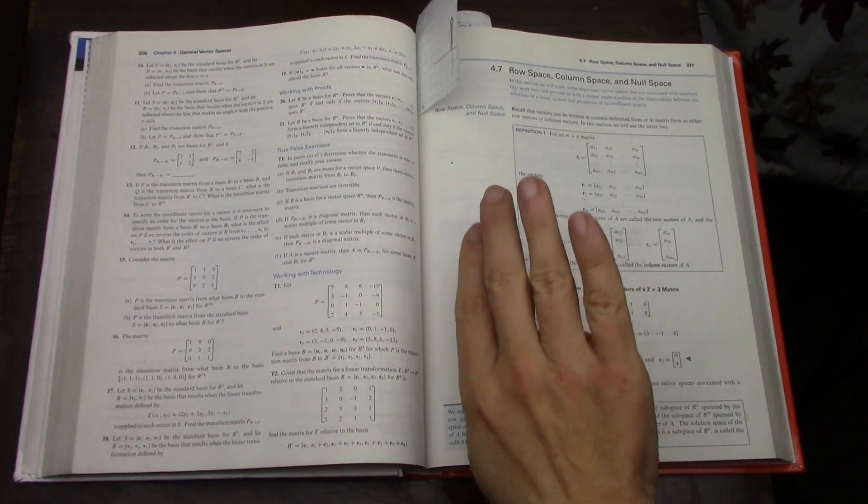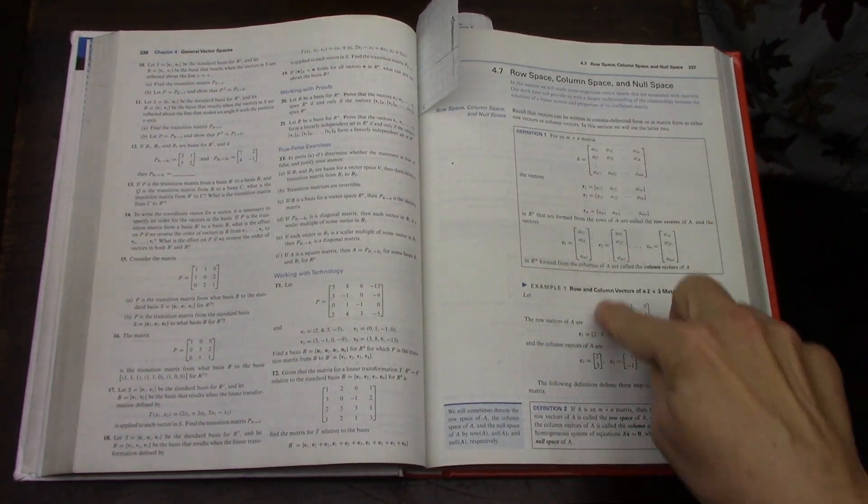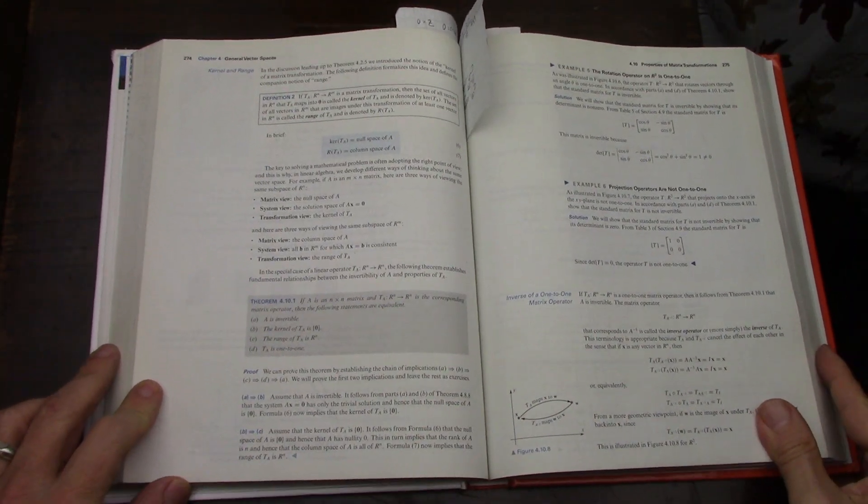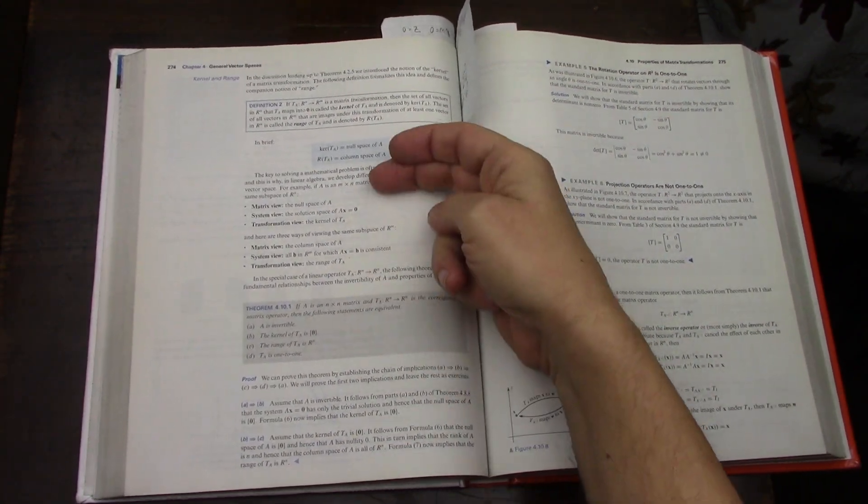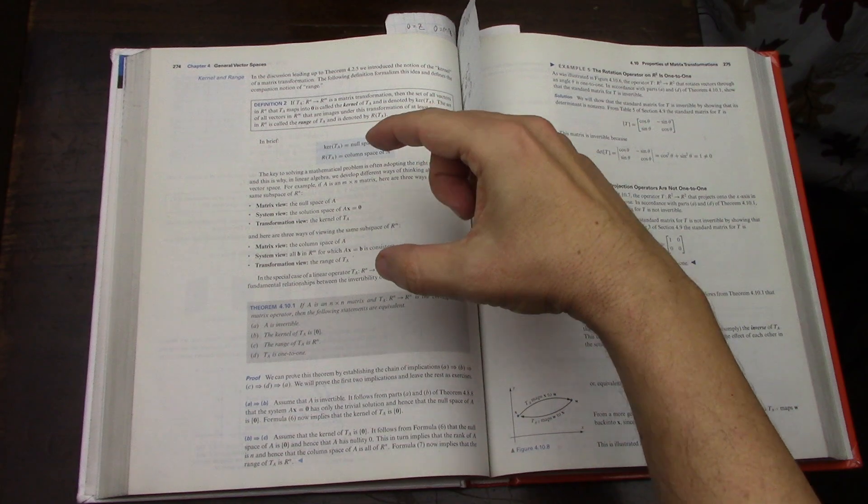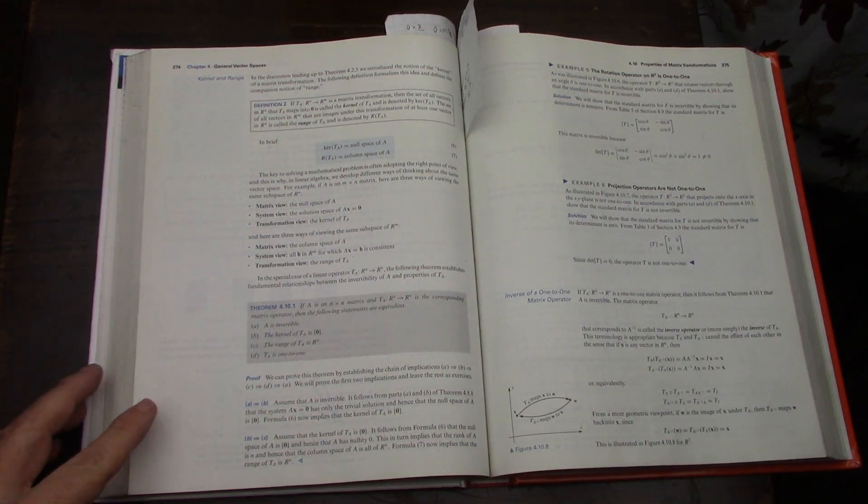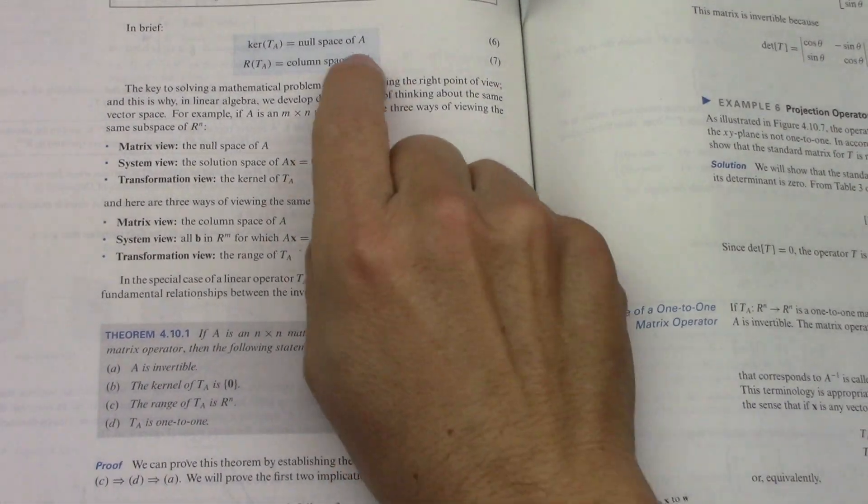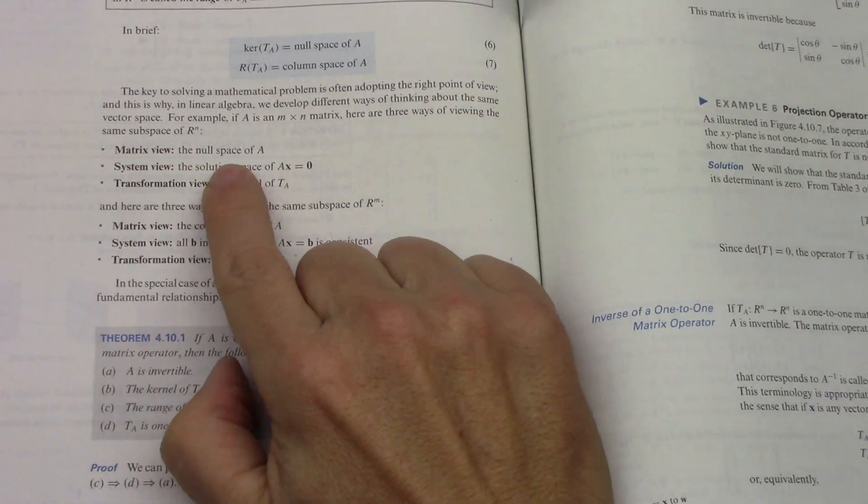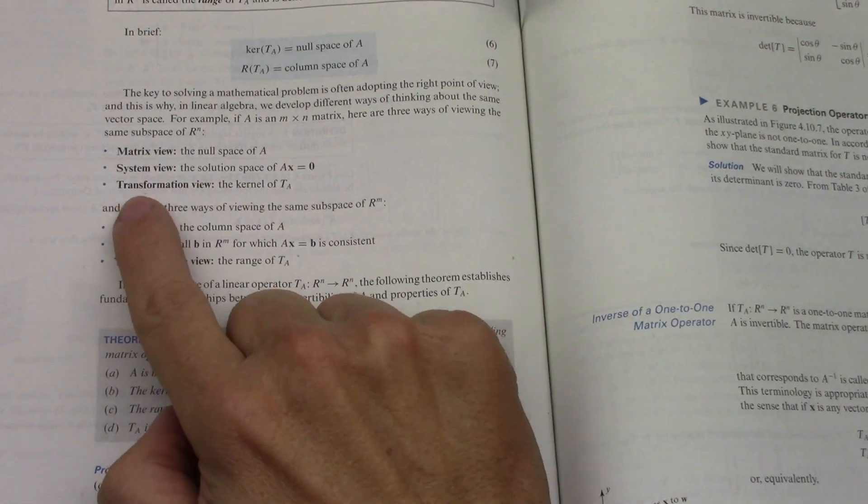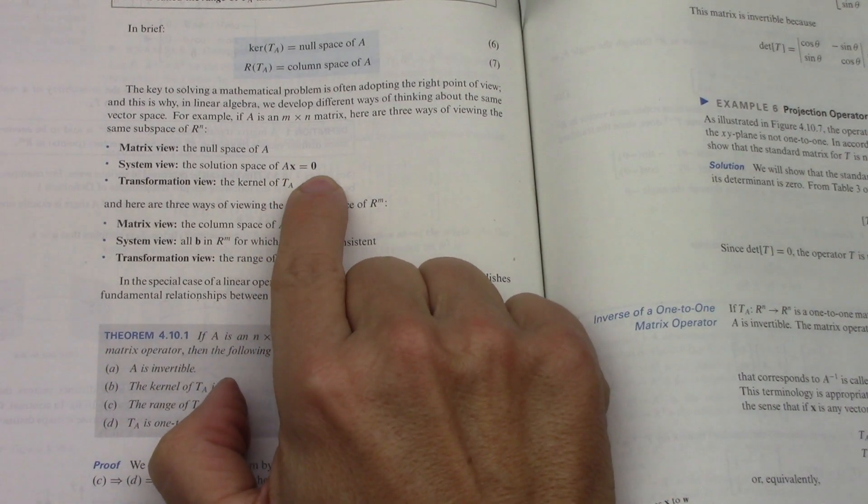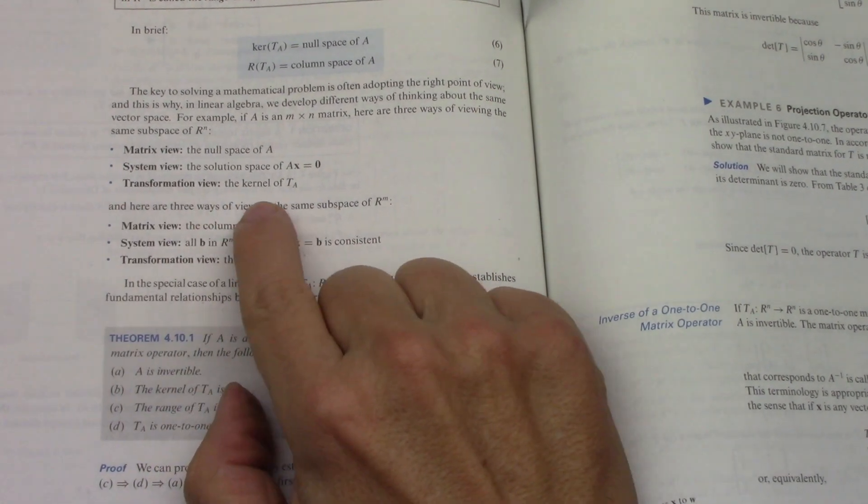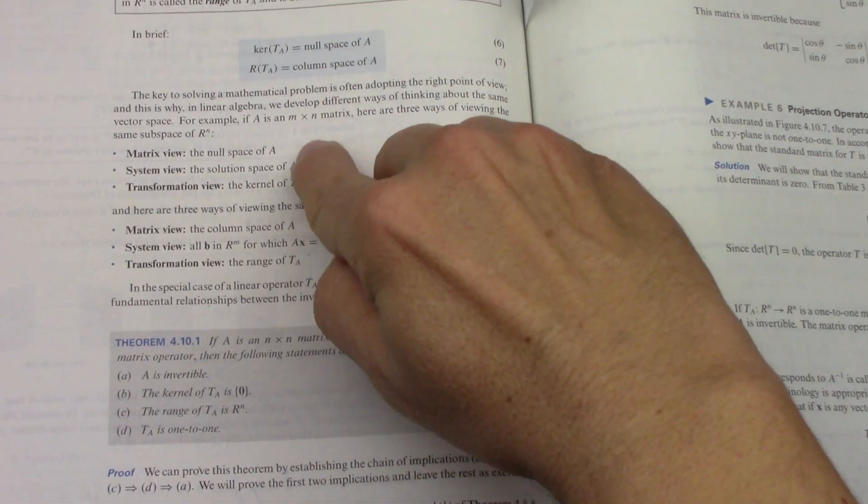In the case of Anton, he tells you about the row space, column space, and null space, and explains what they are with examples. Then at some point, he gets down to business by comparing the different views by which these spaces are described. I'm going to zoom in. The matrix view says it's the null space of A. The system view says it's the solution space of AX equals zero, the zero vector. A is a matrix, X is a vector. The transformation view says it's the kernel of the transformation of the matrix A.